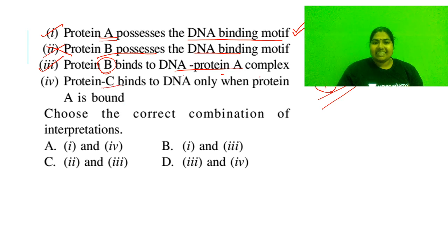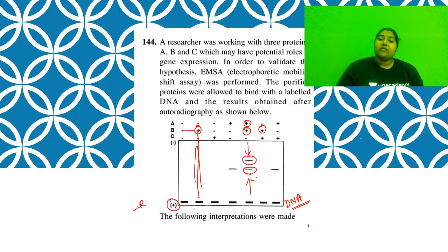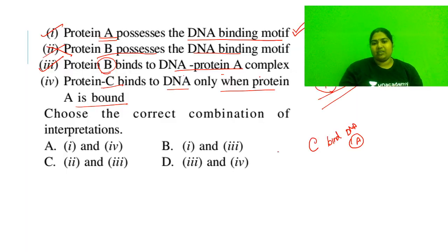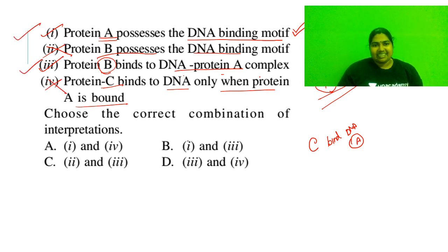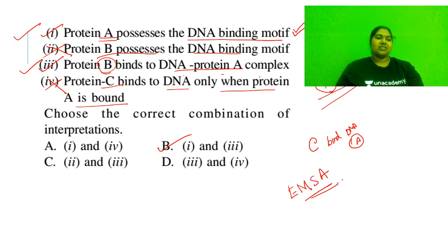Option 4: protein C binds with DNA only when protein A is already bound. Check lane 7 - A and C are added together. You see only the A protein band - no extra band for C. So protein C is not binding even when A is bound. This is a wrong statement. The correct answer is options 1 and 3 - that is option B. Protein A has a DNA binding motif, and protein B binds the DNA-protein A complex.